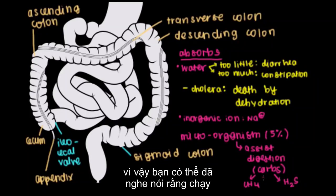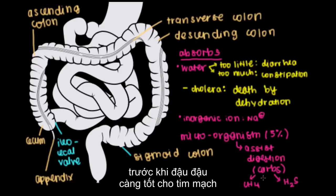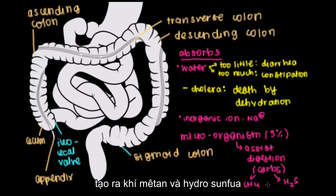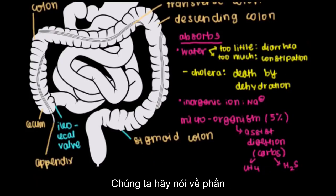You've probably heard that rhyme before: beans, beans, good for the heart — the more you eat, the more you produce methane and hydrogen sulfide. Methane causes flatulence, and hydrogen sulfide is something that smells terrible. Alright, enough farting around — let's talk about the last part of our GI tract.